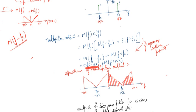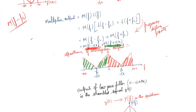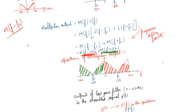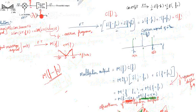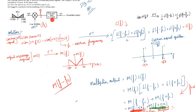So m(f + 15k) is the spectrum advanced by 15k to the left. We have now completed the multiplier output analysis. The multiplier output goes to the input of the low pass filter. The filter permits 0 to 15 kHz and blocks everything greater than 15 kHz. So the low pass filter passes only the 0 to ±15 kHz portion of the multiplier output spectrum.